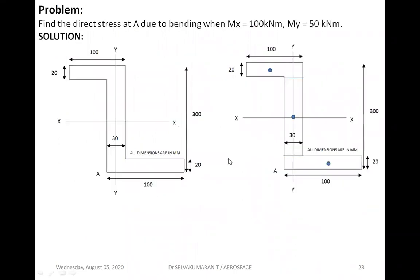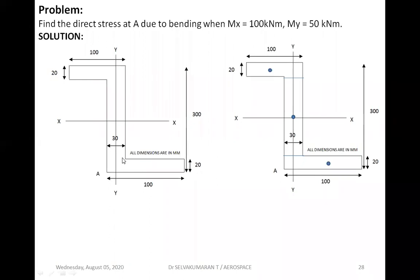Moving to the next problem: find the direct stress at point A due to bending moment when Mx = 100 kNm and My = 50 kNm. The direct bending moments are given, so there is no need to worry about sign convention or direction. This is a Z-section. It is not a symmetric section — it is an anti-symmetric section.